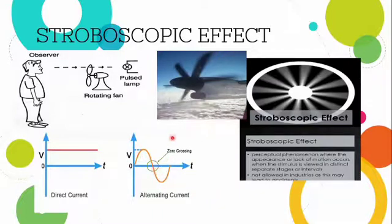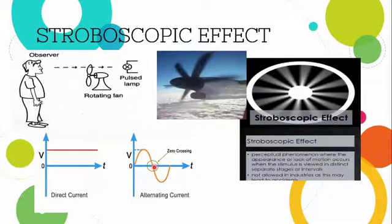In one cycle there is one zero crossing, so after 50 cycles we have 100 zero crossings. Under normal conditions, this flickering cannot be noticed by the naked eye. But when the lamp flickers at zero crossing, it creates a flicker inside the lamp. While normal visible eyes cannot notice it, if there is a rotating object combined with the flickering lamp, the result is an optical illusion — this is called the stroboscopic effect.